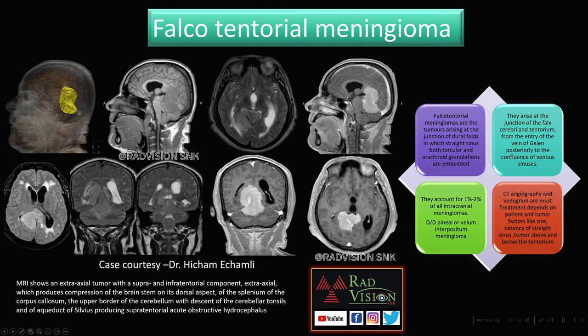Falcotentorial meningiomas are very rare, arising at the junction of the falx cerebri and tentorium from the area of the vein of Galen, posterior to the confluence of venous sinuses; they account for 1–2% of all meningiomas. Differential diagnosis includes pineal or velum interpositum meningioma. CT angiography and venography are critical — angiography identifies feeding vessels, and venography assesses whether the straight sinus, confluence of sinuses, or vein of Galen is infiltrated, as this may lead to venous sinus thrombosis. Surgical resection is required. Thanks to Dr. Hicham Echamli for contributing this case.